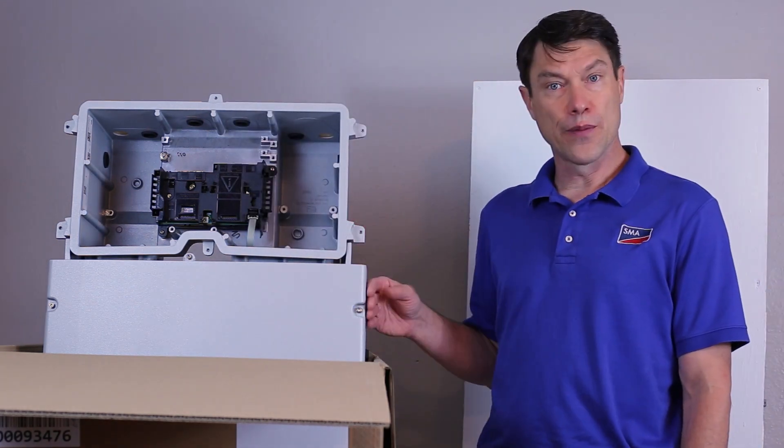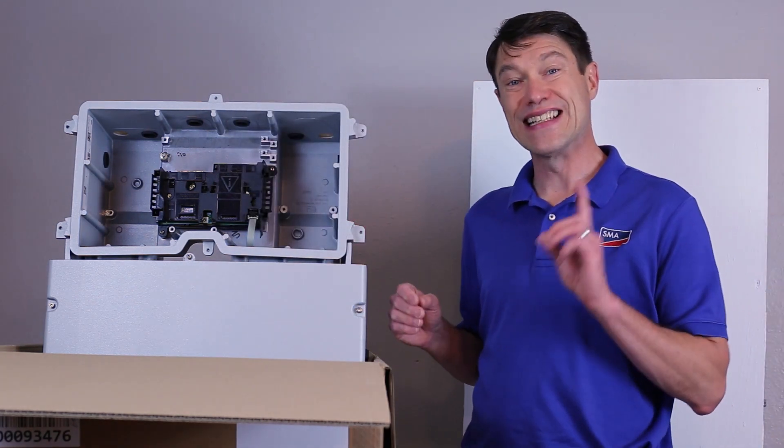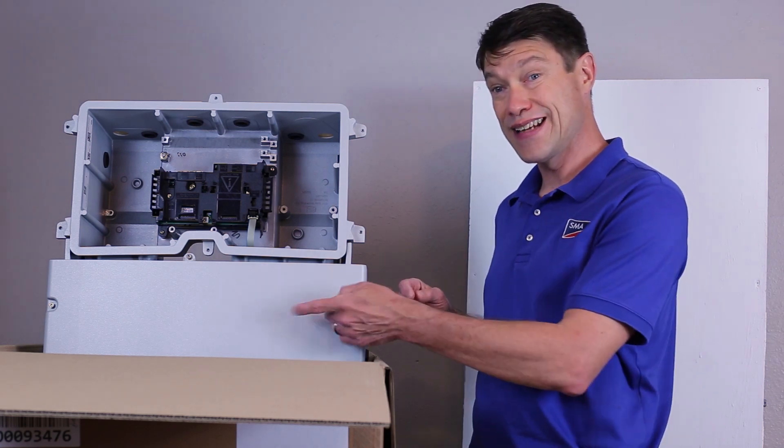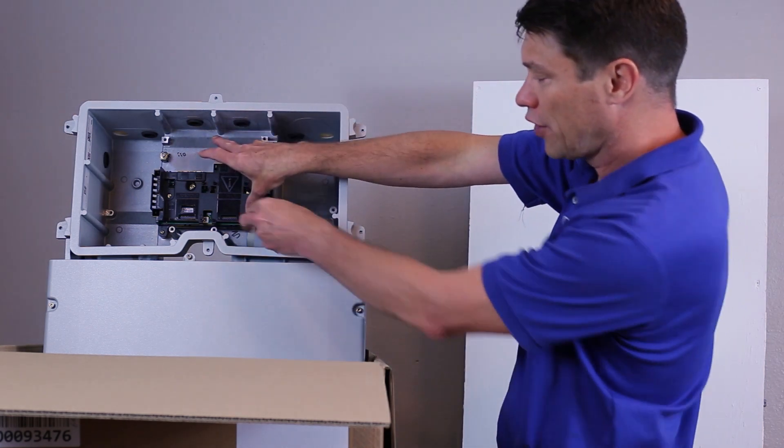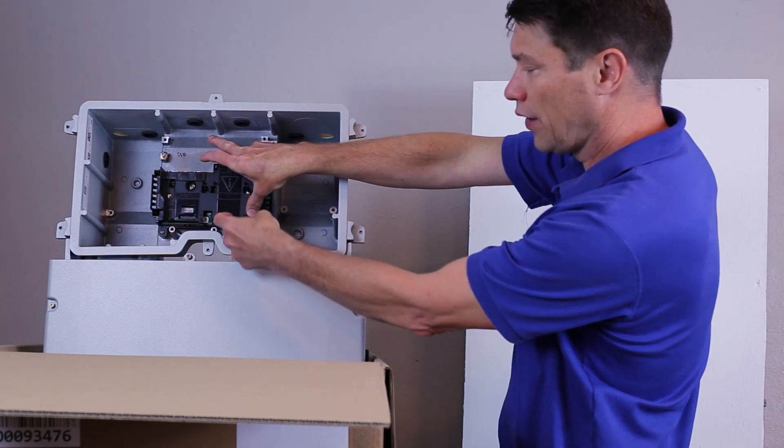Before separating the connection unit from the power unit, it's very important to remember to detach the ribbon cable that brings the data from the power unit to the communications board. Do this by lifting the black lever and gently pulling off the ribbon cable.